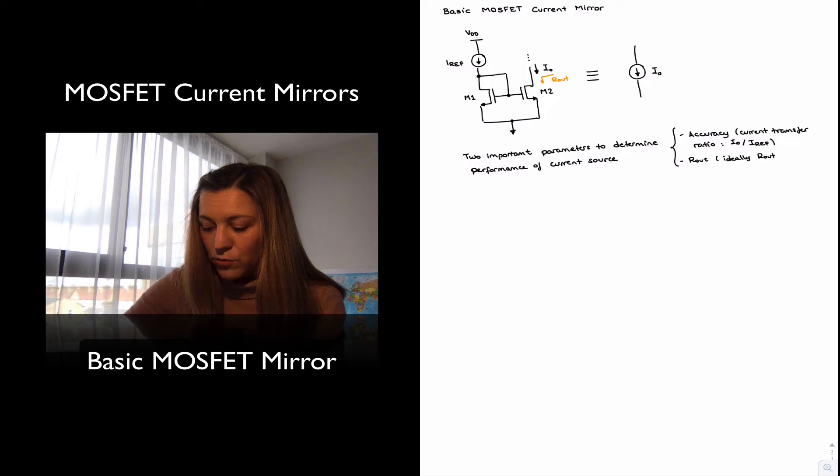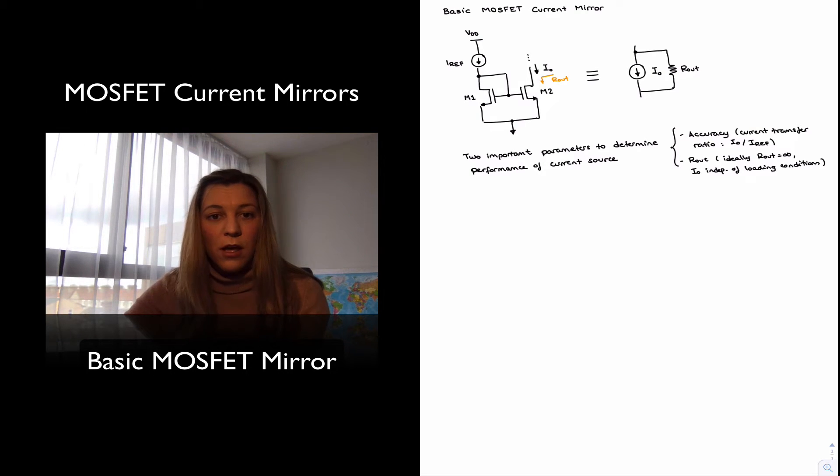Ideally, we will want R out to be equal to infinity, as that will imply that I out is independent of the loading conditions. In other words, if I have my model for my current source, with a particular output resistance in parallel with my current source, this will be the Norton equivalent circuit for my current source. I want that when I connect some load resistance to my circuit, R load, I want all of I out to flow through R load.